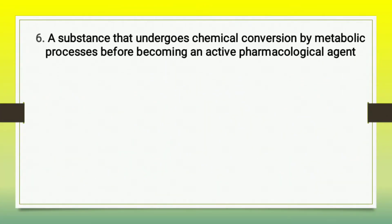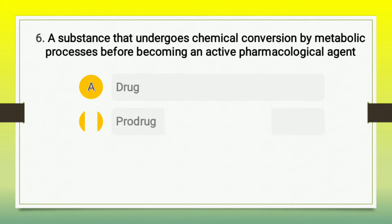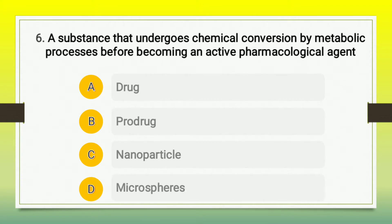Question number 6: a substance that undergoes chemical conversion by a metabolic process before becoming an active pharmacological agent is — A) drug, B) prodrug, C) nanoparticles, or D) microspheres. The correct answer is option B, prodrug.